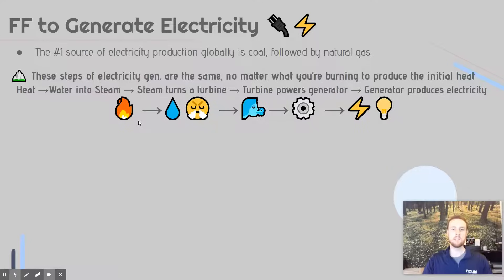The steps are: first, the generation of heat by burning something; that heat is used to turn water into steam; that steam is then forced through a pipe which turns a turbine — think of it as almost like a giant metal fan that can be spun by steam. That turbine then powers a generator, which produces electricity from the kinetic motion of the turbine.